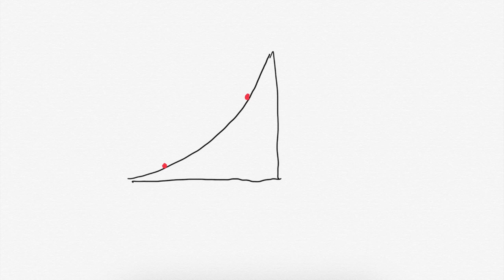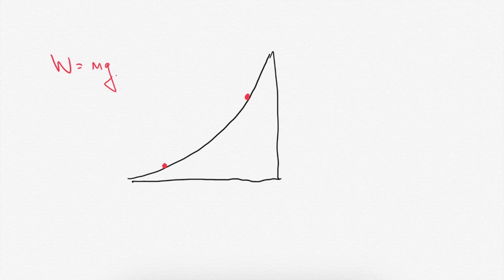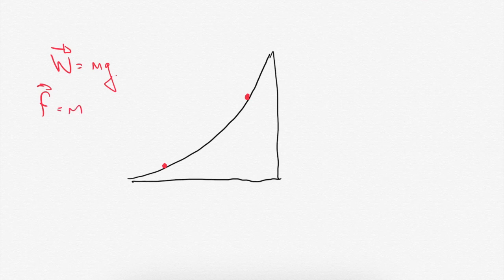This is a little bit trickier than your average problem because we're dealing with a curved surface here. What you might think is that the only thing affecting the ball is its weight, equal to its mass times the acceleration due to gravity — W equals mg, the downward force on it. Its mass is constant and g is constant, so the downward force is constant. By Newton's second law, if the force is constant, the acceleration is going to be constant.